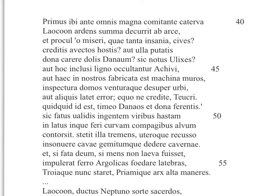Aeneas starts his story with the horse just appearing on the beach. You're supposed to know the story of the Iliad — the war going back and forth, and the Greeks in a difficult position after losing Achilles. Hector is dead on the Trojan side, but Achilles is dead on the Greek side. They can't beat Troy without Achilles. So you see the Trojans analyzing this horse, which ends up being the downfall of Troy, as they stare at it on the beach. And so Laocoon comes in here.